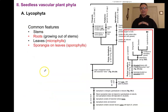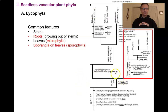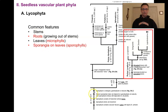Our first phylum of living seedless vascular plants is the Lycophyta — a monophyletic group. What do they have? Stems, which we've seen before as a basal characteristic. Now we have roots — a basal characteristic of all the other plants we're looking at — and the roots are going to be growing out of the stems. These are called adventitious roots, which we'll discuss more later.